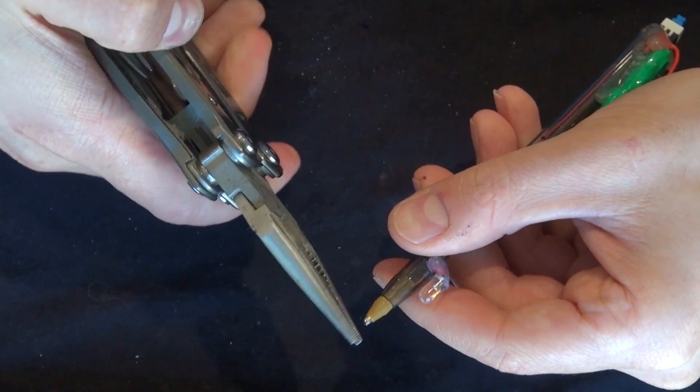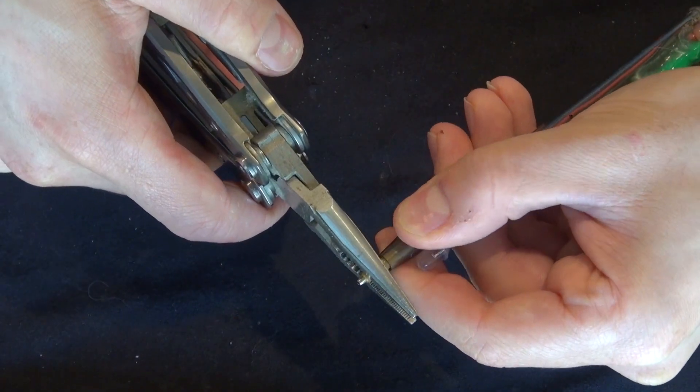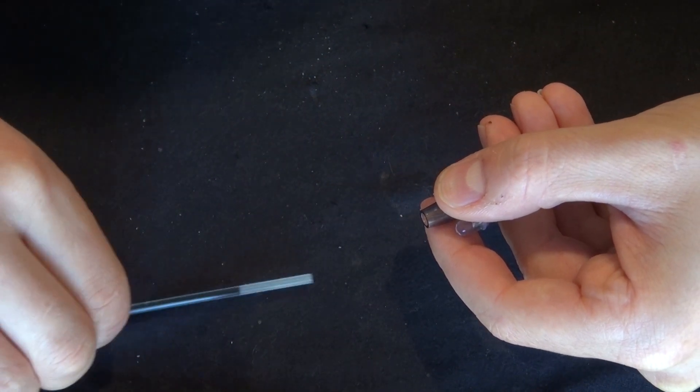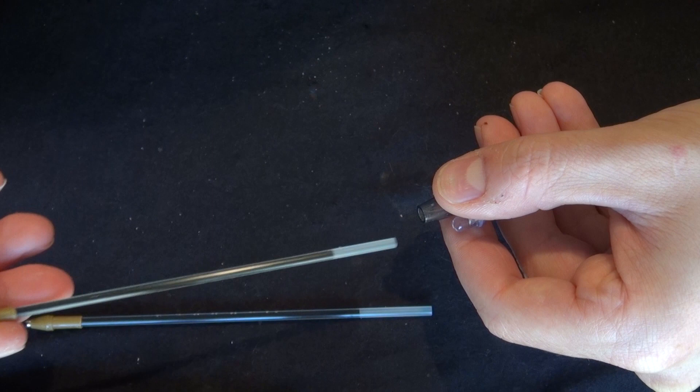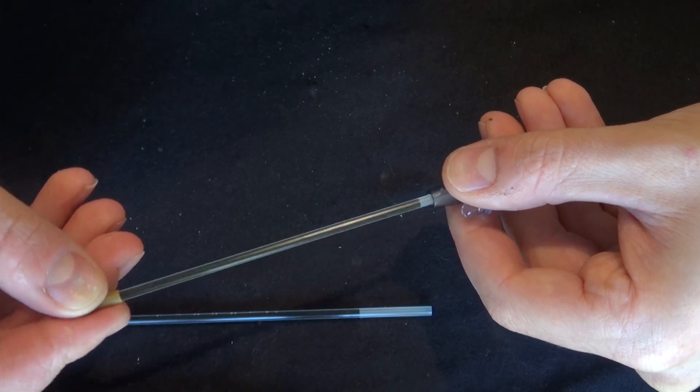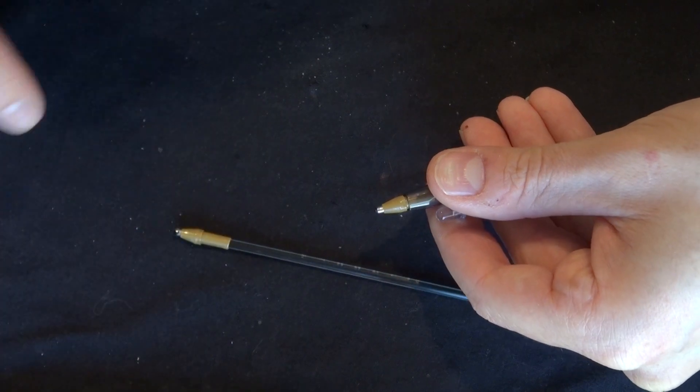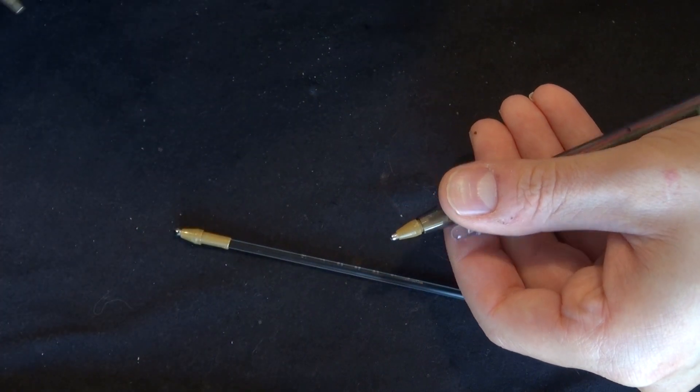If you run out of ink, don't throw the pen away. Just remove the inner cartridge that holds the ink, and you can easily replace it with another one. Or you can do the same thing if you want to change color - black, blue, red, green, or anything you want.